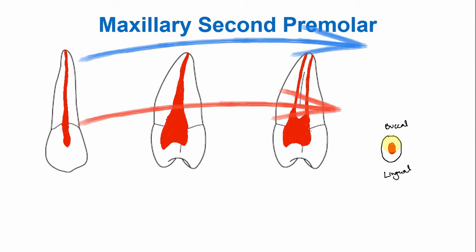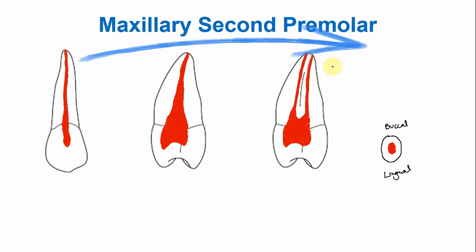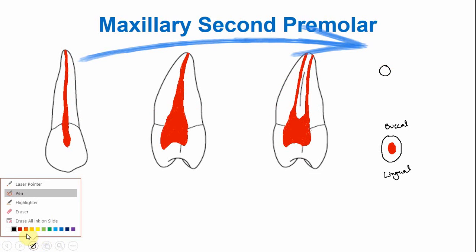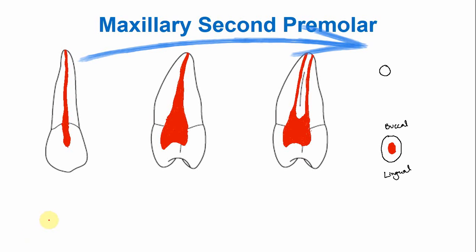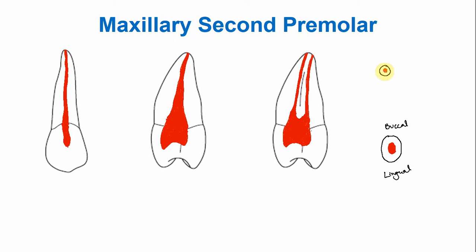In the apical portion, the root is rounded, and the canal also follows the shape of the root. In the apical portion, the canal is rounded and centered within the root.